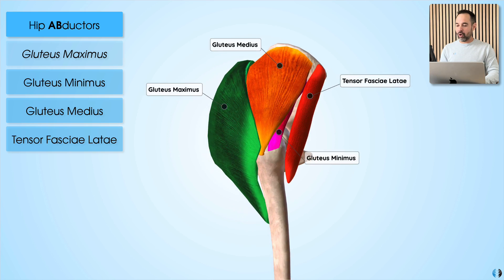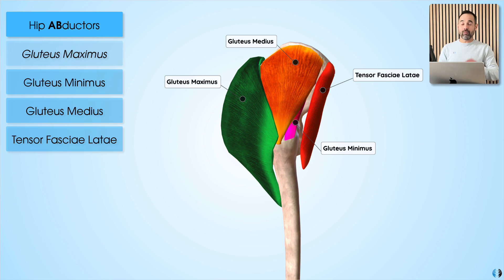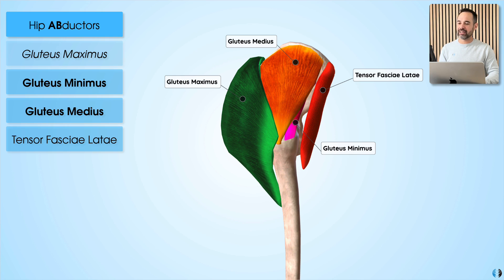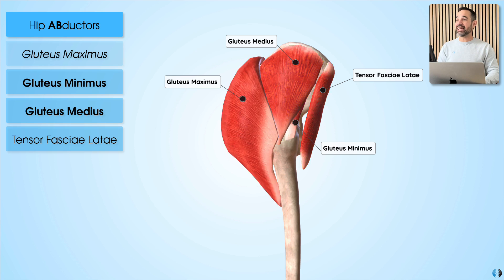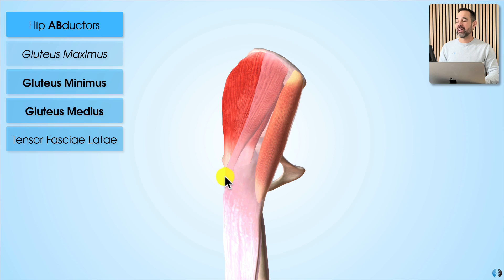Coming back to all these muscles together, a key point about gluteus medius and gluteus minimus is that they insert into the superior facet of the greater trochanter of the femur. When we think of patients who have a gluteal tendinopathy — where they have pain around the lateral hip — it's thought to be a tendinopathy of these two insertions in particular, whereby they can get compressed by the iliotibial band over the top of them when the hip is significantly adducted, which can lead to pain and a gluteal tendinopathy.